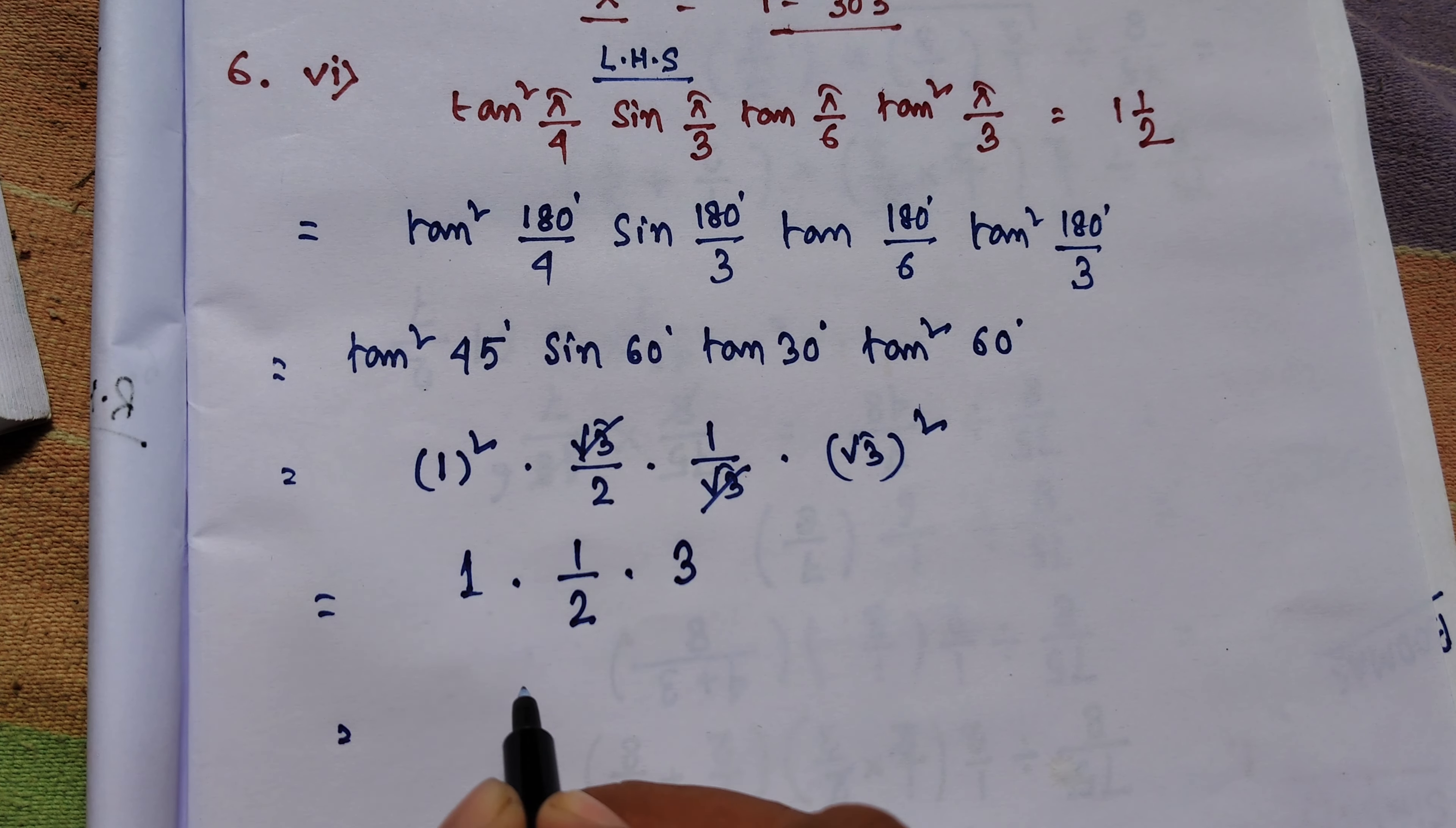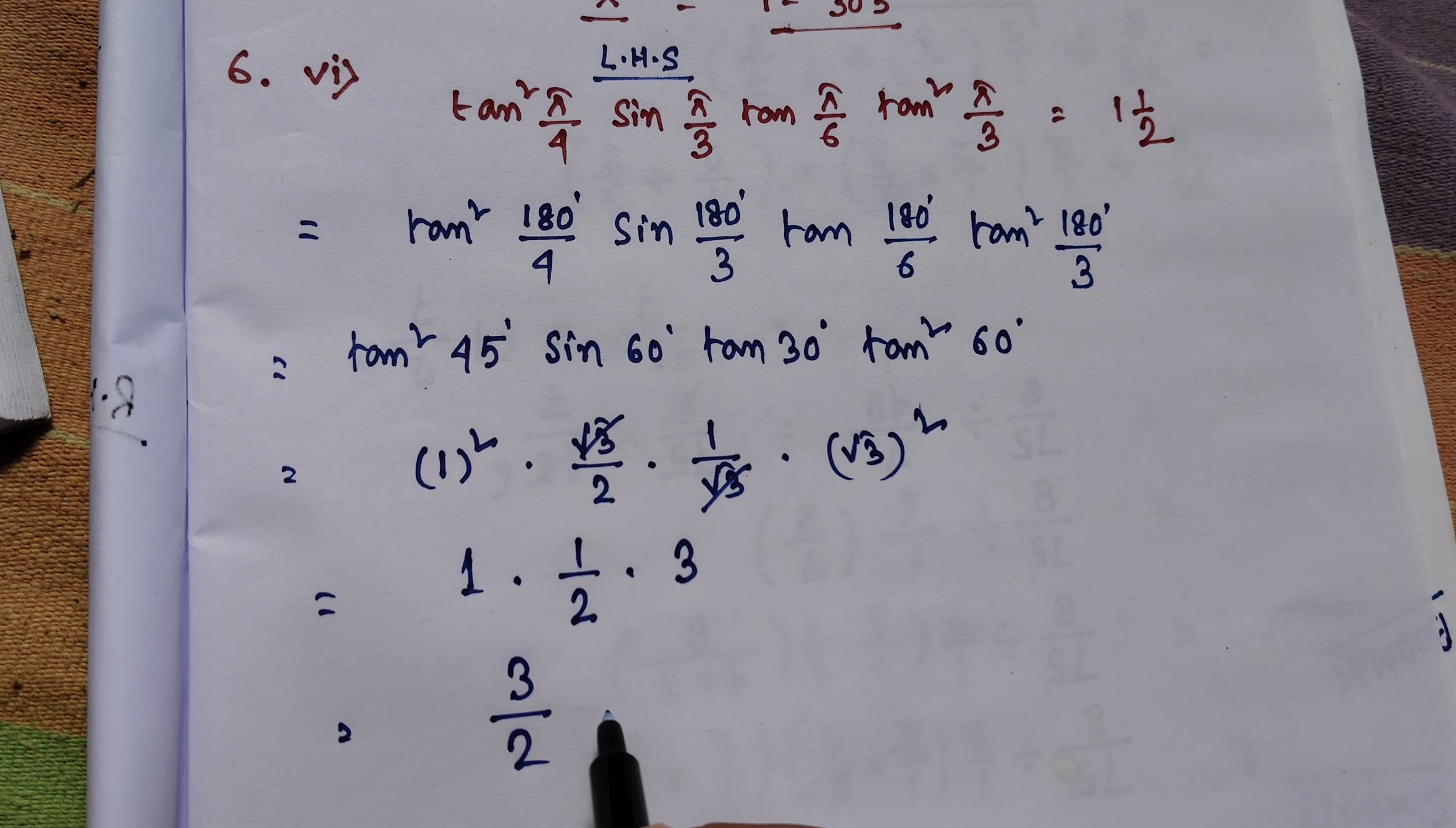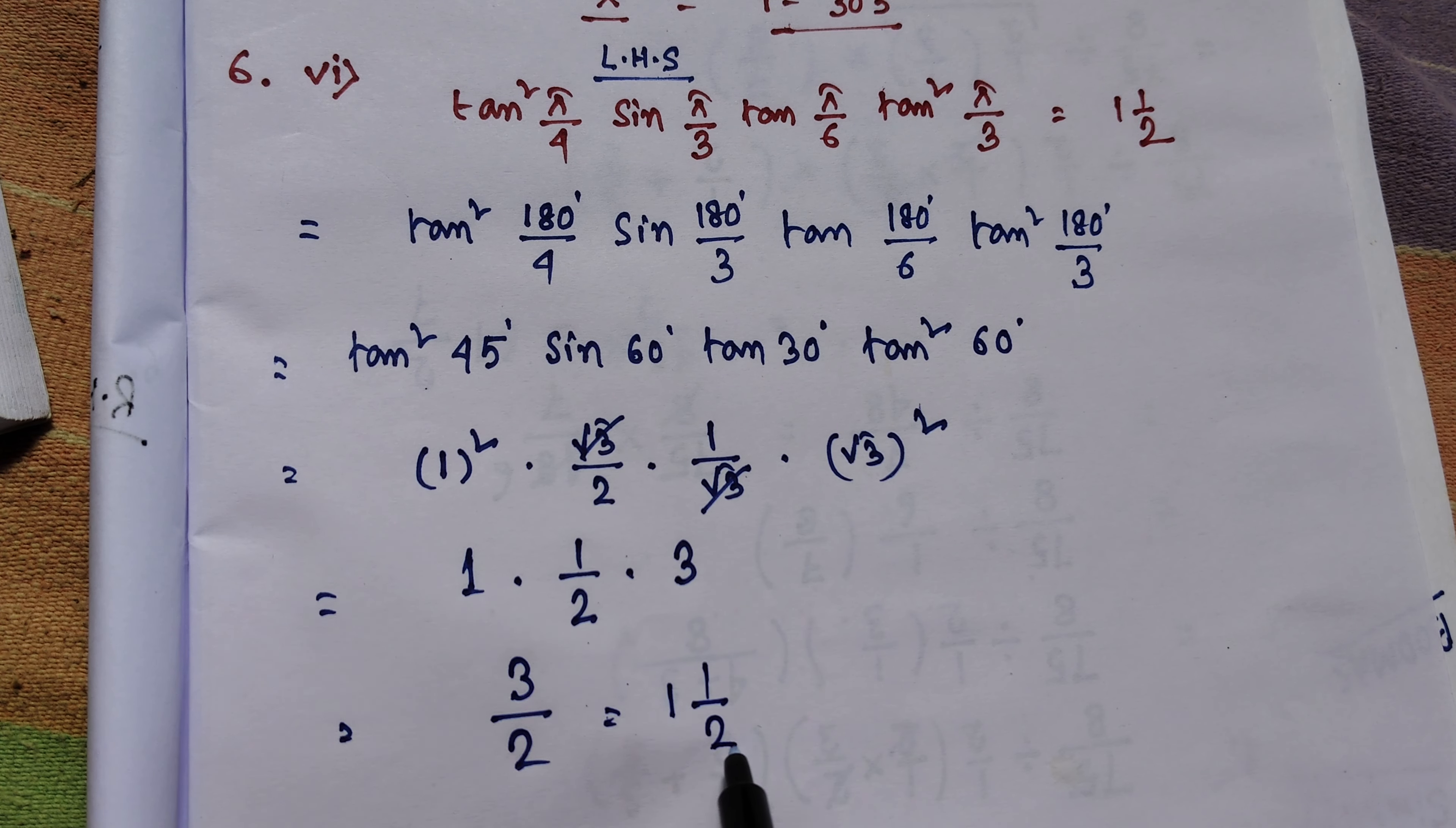So ultimately, this is 3 by 2. So 3 by 2 means 1 whole 1 by 2.